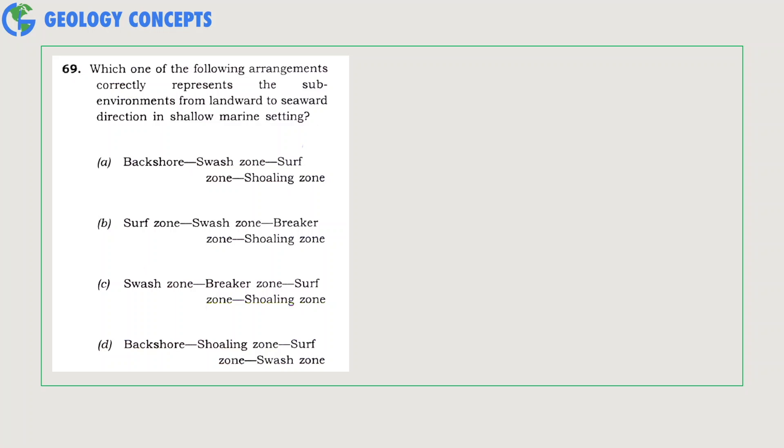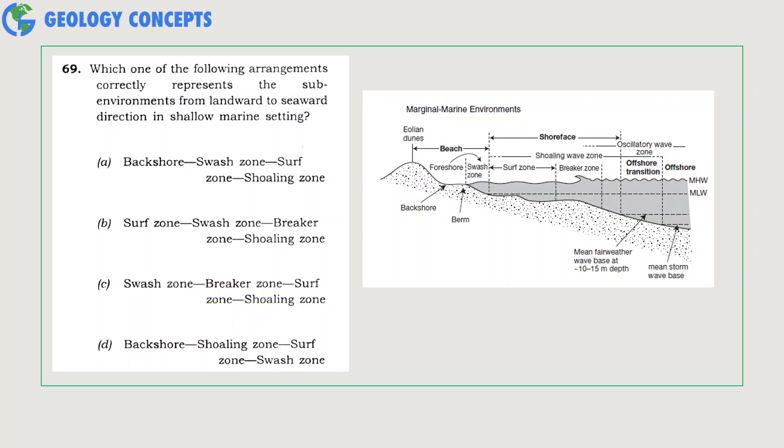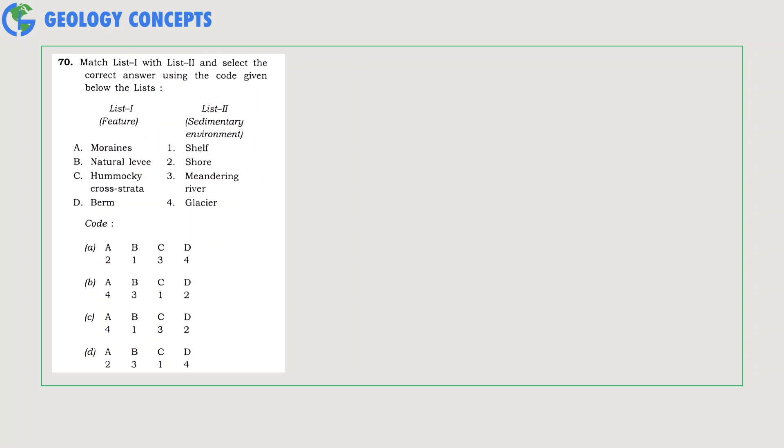Which one of the following arrangements correctly represents the sub-environments from landward to seaward direction in shallow marine setting? As you can see from the diagram, the land to sea direction can be divided into beach, shoreface, and offshore. The beach starts with backshore and ends with swash zone. Then the shoreface includes the shoaling zone, which is divided into surf zone and breaker zone. The shoaling zone extends up to the offshore transition zone. So the most appropriate sequence is option A: backshore, then swash zone, then surf zone, and then the shoaling zone.